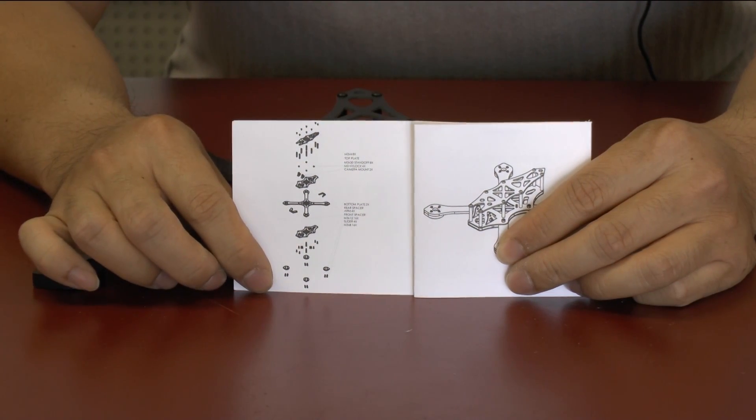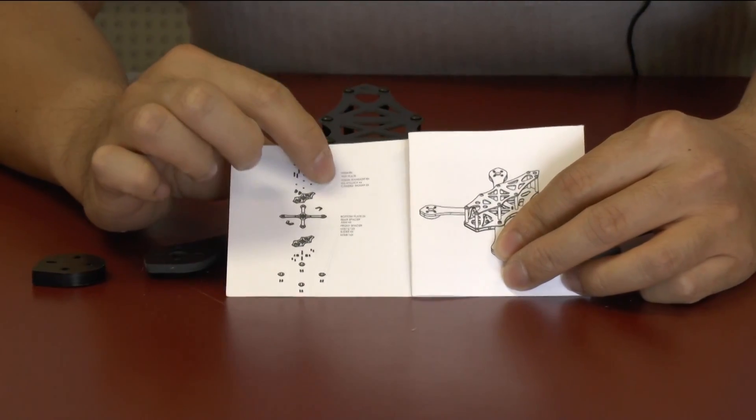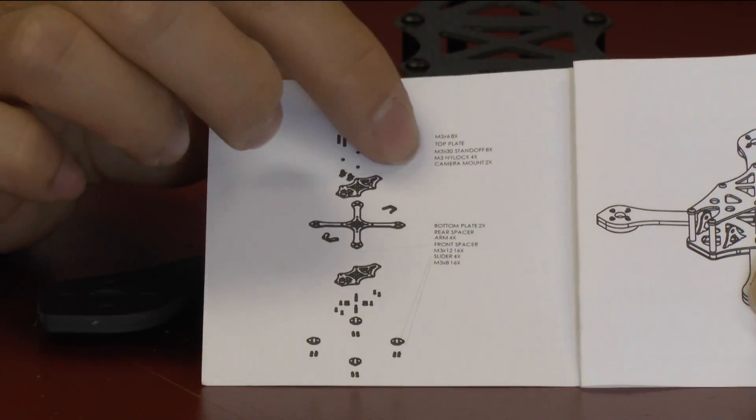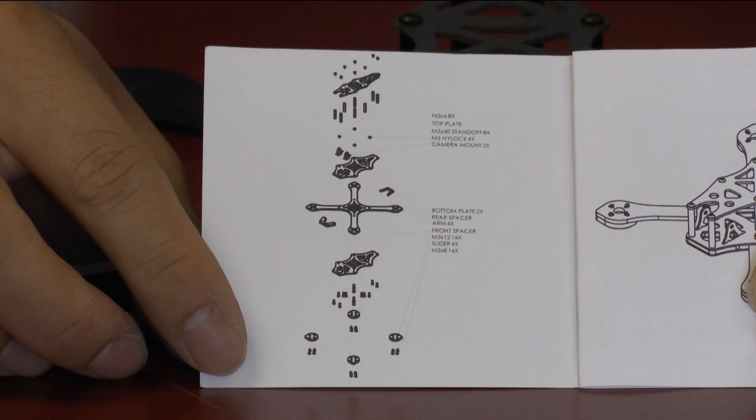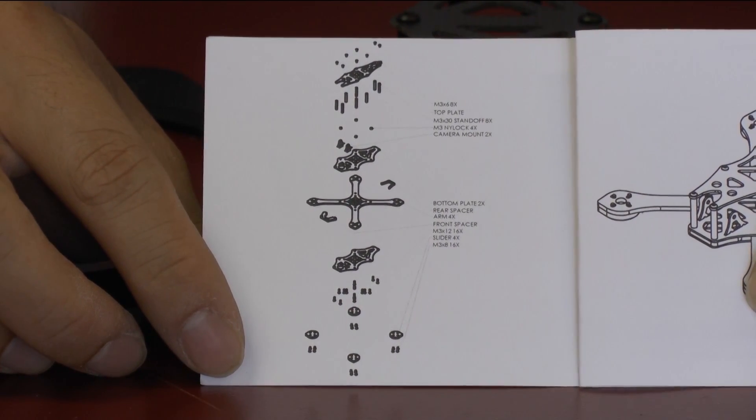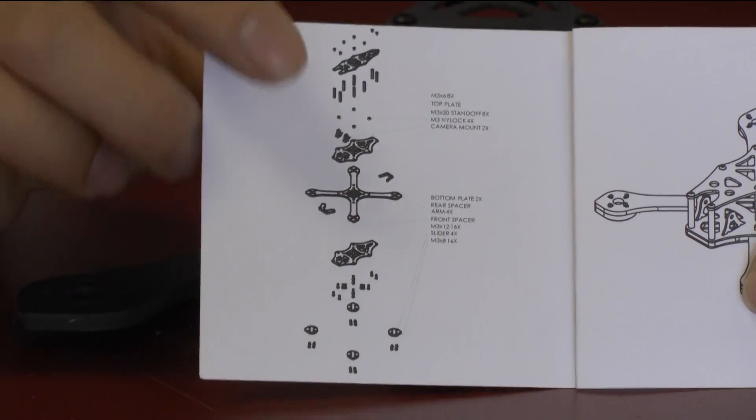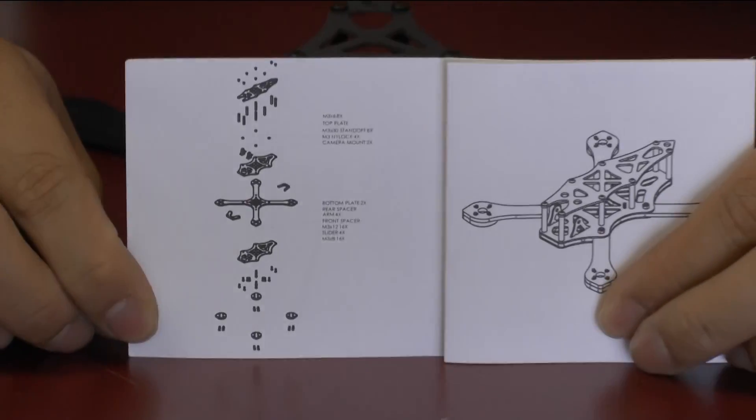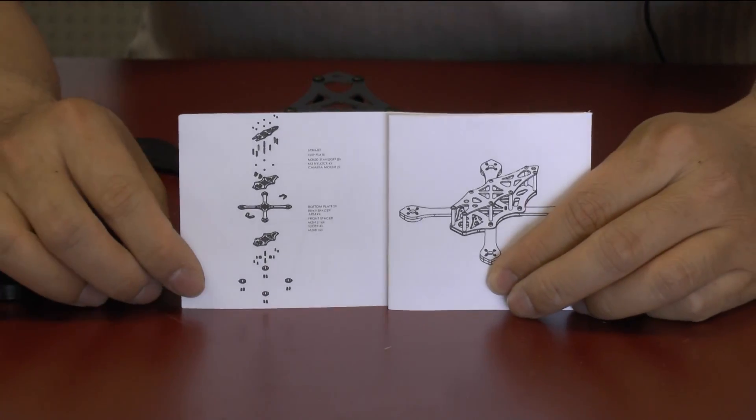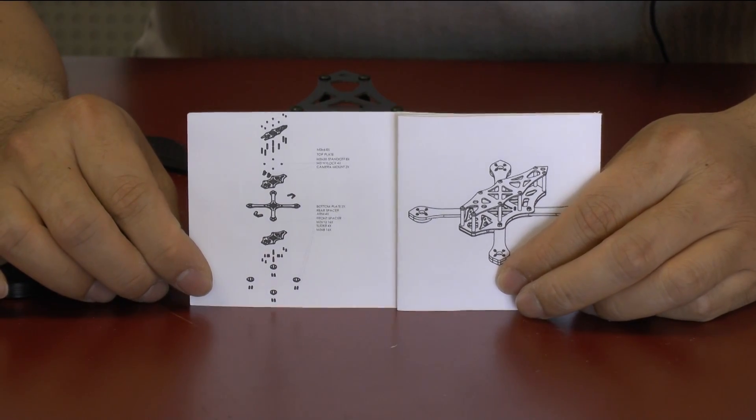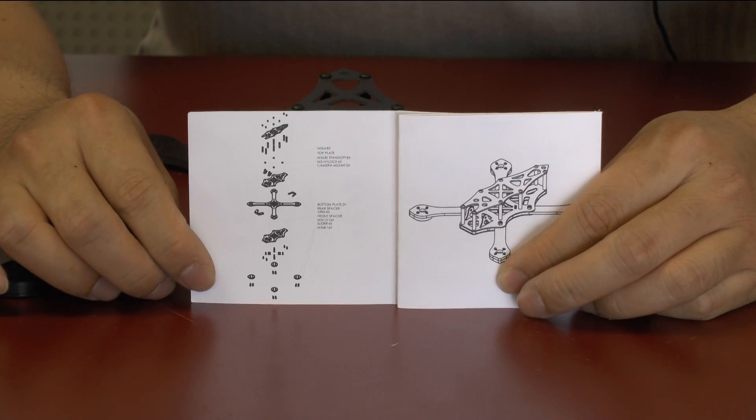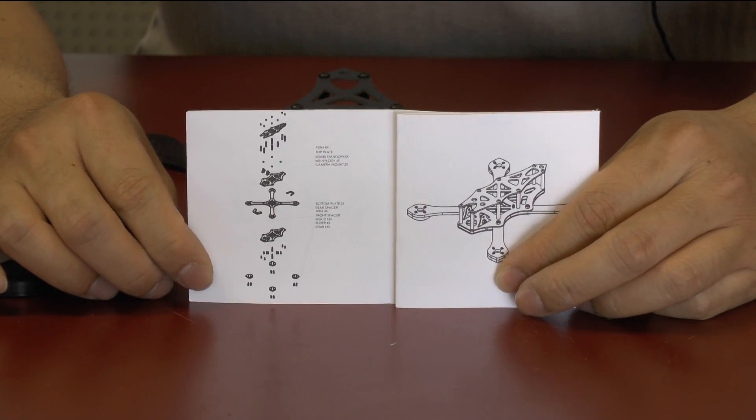One thing I would also like to say is this instruction booklet is actually really useful. This particular layout, the lines are really hard to see. I wish the lines were a little bit better. But if you actually spend a moment to take a look at the lines, they will tell you where each screw goes and where to put them. So definitely really nice. I always like to have instruction booklets. And this one is clean, it's simple, and it comes with a frame. So kudos to them for actually spending the time to making an instructional booklet that goes with the frame.